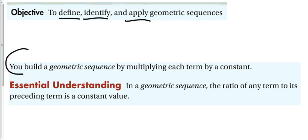Here's our big point. You build a geometric sequence by multiplying each term by a constant. Just like in an arithmetic sequence, we build it by adding every term by a constant. Here we are going to be multiplying.